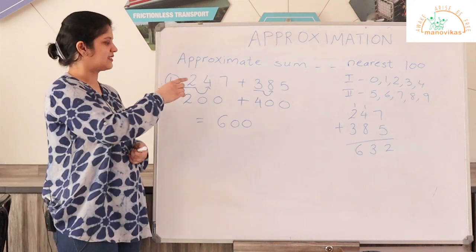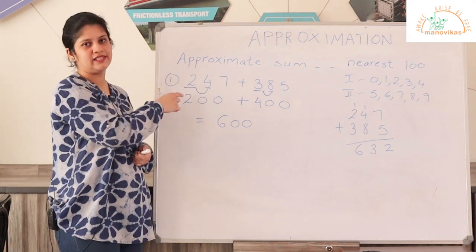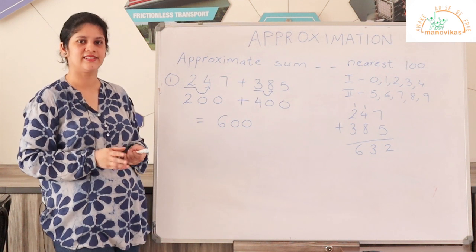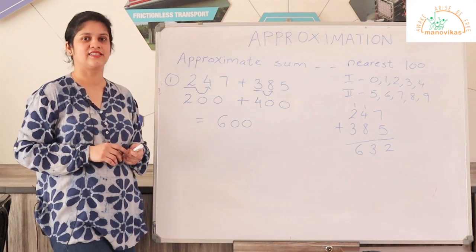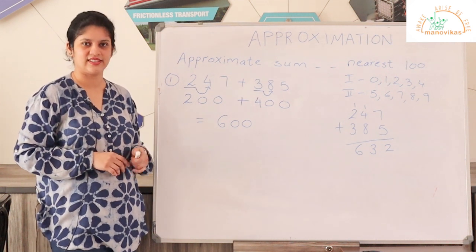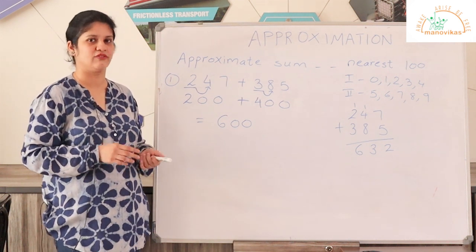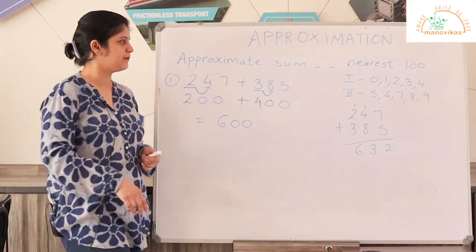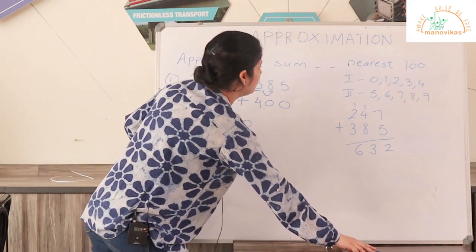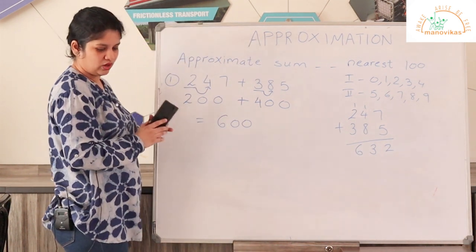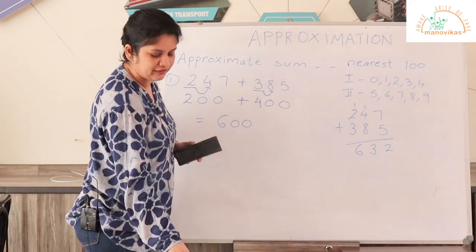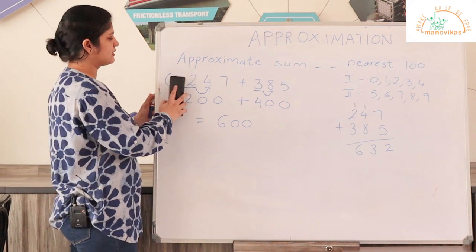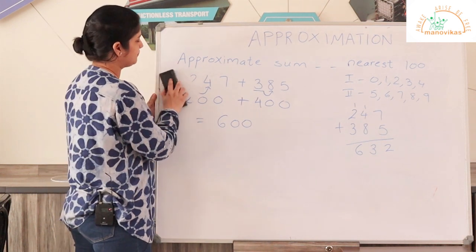When rounding to the nearest ten, you change the tens place; when rounding to the nearest thousand, you change the thousands place. In the same way, you all can solve questions 4, 5, and 6 from exercise 1D.